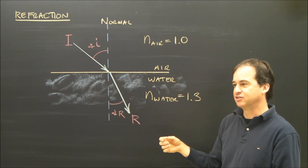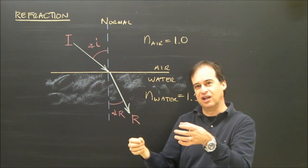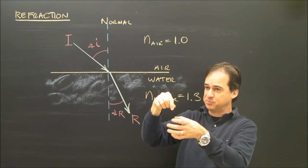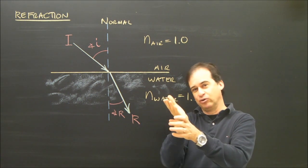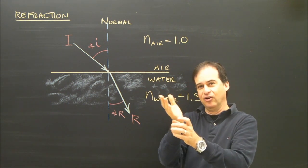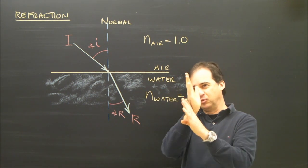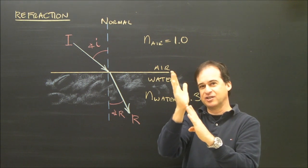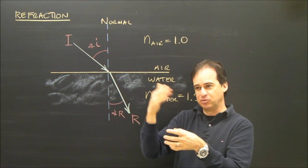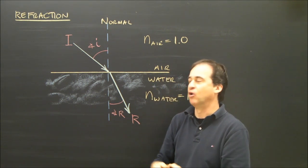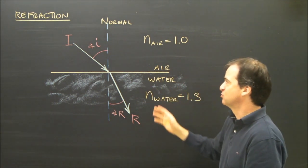This is what causes things to look a certain way. If you take a glass of water and put a spoon in it and hold it at a little bit of an angle, you'll notice the spoon and the handle kind of separate between the air and the water. So this is what's happening.